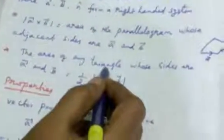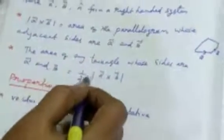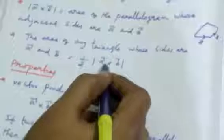The area of any triangle whose adjacent sides are A vector and B vector is equal to half into modulus of A cross B. Notice that the cross product is non-commutative: A cross B equals minus B cross A.